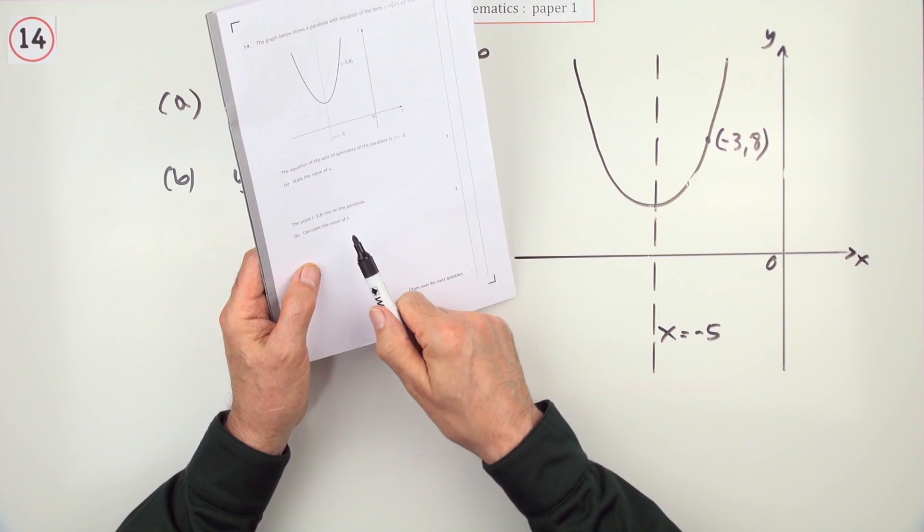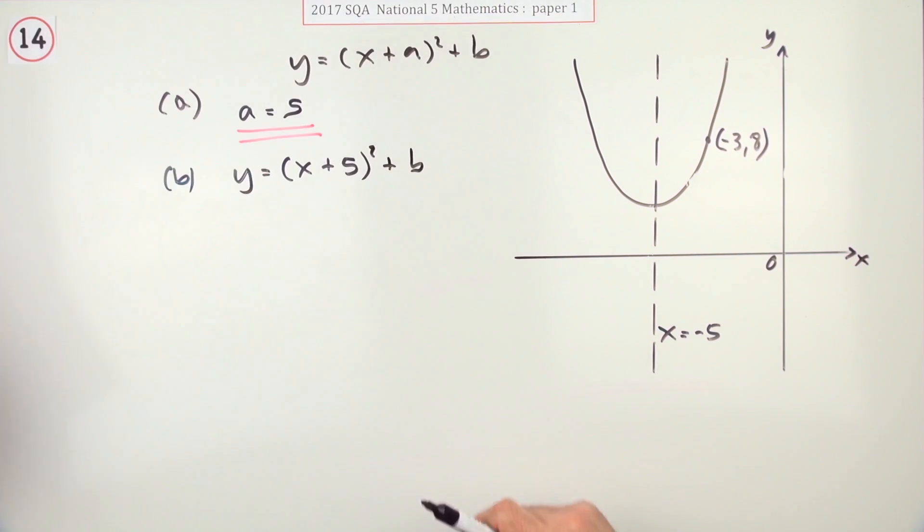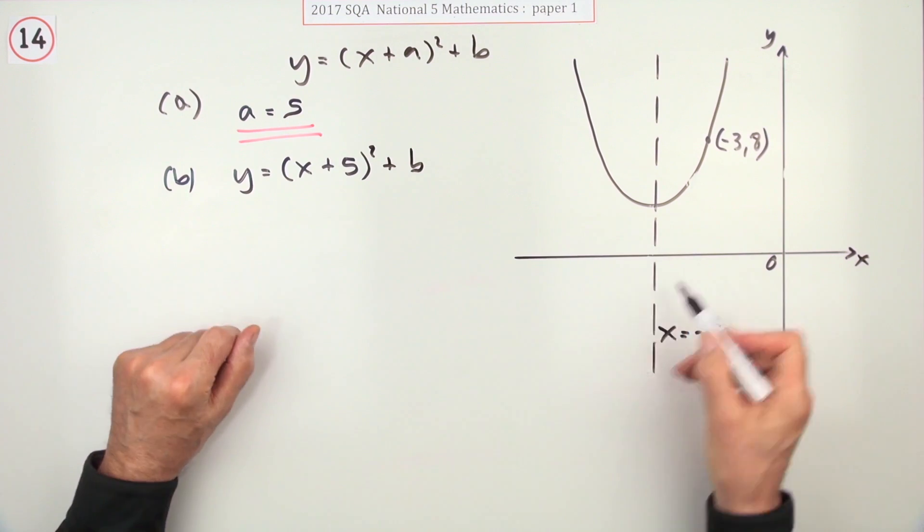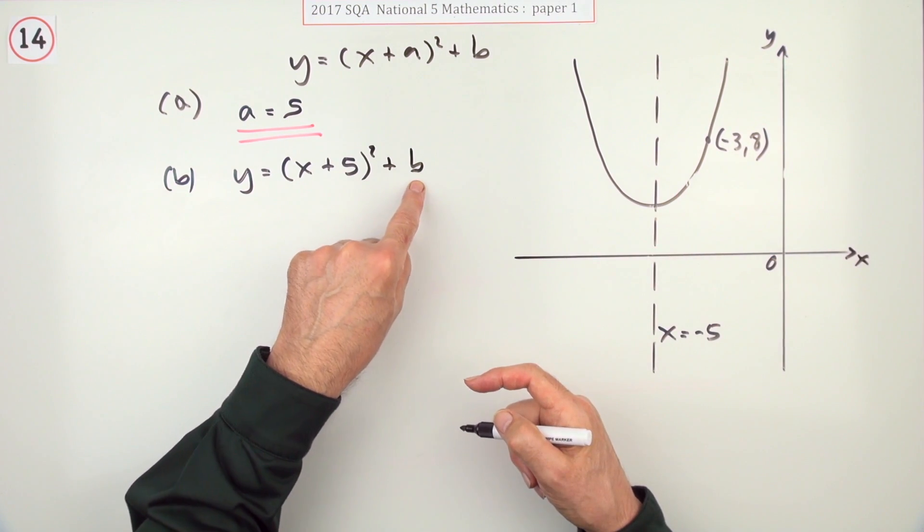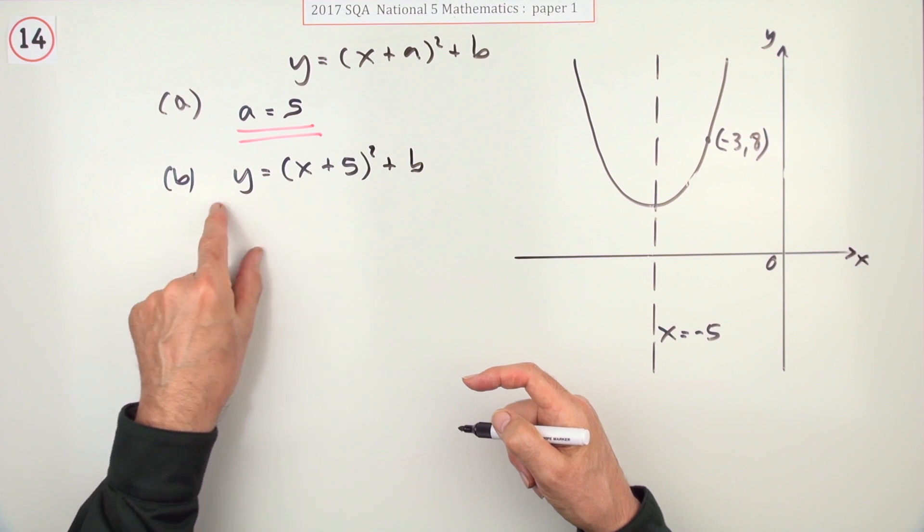And that is part b. For two marks now, what's the value of b? So finish off the equation in other words. So what's a plus 5? Because that was back at minus 5. So to find this value here for b, you need numbers to put in for x and y.